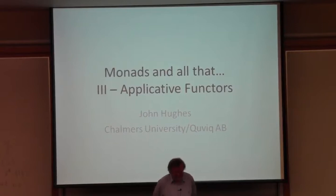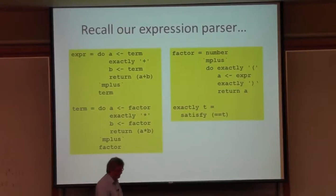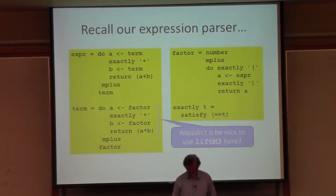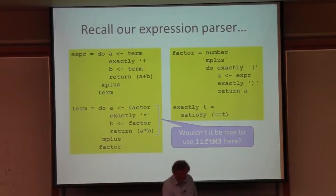This is the third lecture in the Monads series, and I'm going to spend it talking about applicative functors. I want to start by going back to the parser I wrote yesterday and critiquing it a little bit. It's a little bit wordy. Wouldn't it be nice, in the definition of term, to replace that sequence of monadic parsers by a call to liftM3?